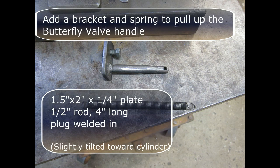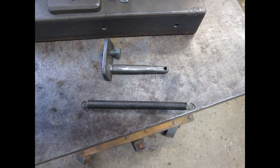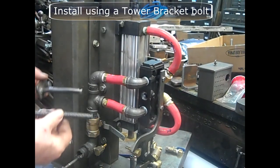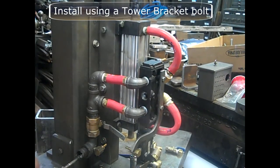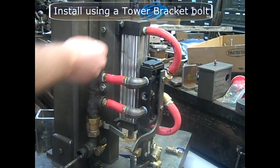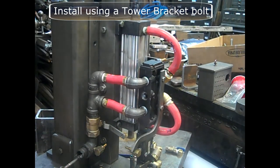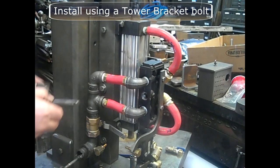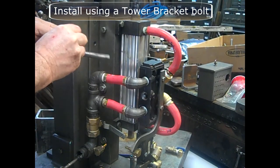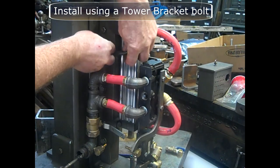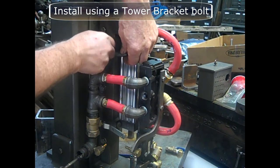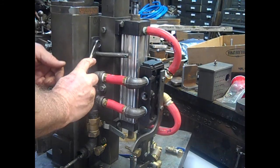Next, we're going to add a bracket and a spring to pull up the butterfly valve handle. This is made with a 1 1/2 by 2 inch by 1/4 inch plate and a 1/2 inch rod, 4 inches long, plug welded in. We're going to install that bracket using one of the tower bracket bolts. That bracket is bent a little bit toward the cylinder so it avoids any interference between the spring and the hoses.